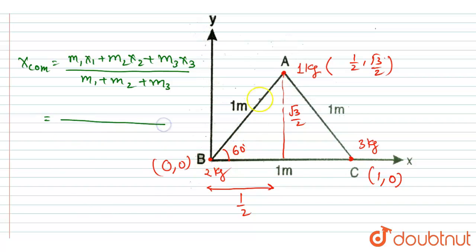So the x-coordinate of this A particle is half, so half times 1 is half. X-coordinate of B particle is 0, so 0 times 2 is 0. Now x-coordinate of this C particle is 1, so 1 times the mass of this particle is 3, so 1 times 3 is 3, divided by total mass, that is 1 + 2 + 3, that is 6.